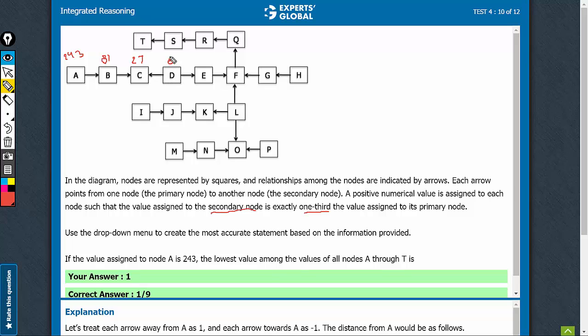This becomes primary, so this must be 3 times 81. Now, once again, secondary of 81, so 27. Secondary again, so 9.